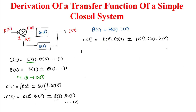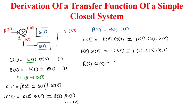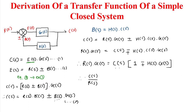Making R(s)·G(s) the subject: R(s)·G(s) = C(s) ∓ H(s)·C(s)·G(s). Taking C(s) as common: R(s)·G(s) = C(s) · (1 ∓ H(s)·G(s)). Therefore, the transfer function C(s)/R(s) = G(s) / (1 ∓ G(s)·H(s)).